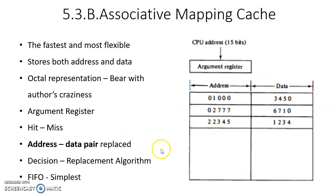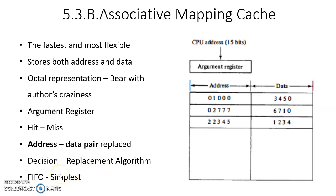When a miss occurs, a decision must be made about which address-data pair to replace with the new one. This decision is taken by a replacement algorithm. There are different replacement algorithms which will be discussed later. The simplest one is First In, First Out — whichever data came in first will be replaced with the newest data. This is how associative mapping cache works.